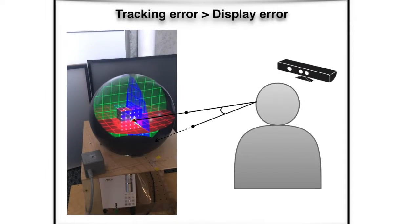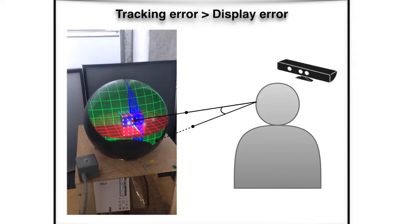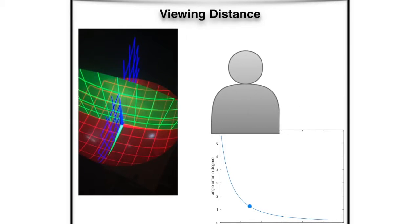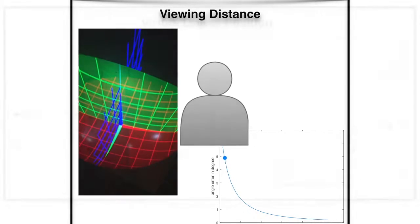We found that the error from head tracking causes significantly more visual error than display calibration error. The visual error becomes more sensitive to the tracking error when the viewer moves closer to the sphere.